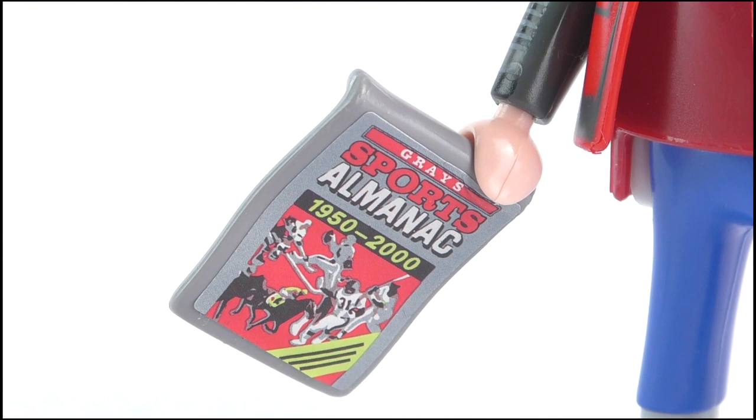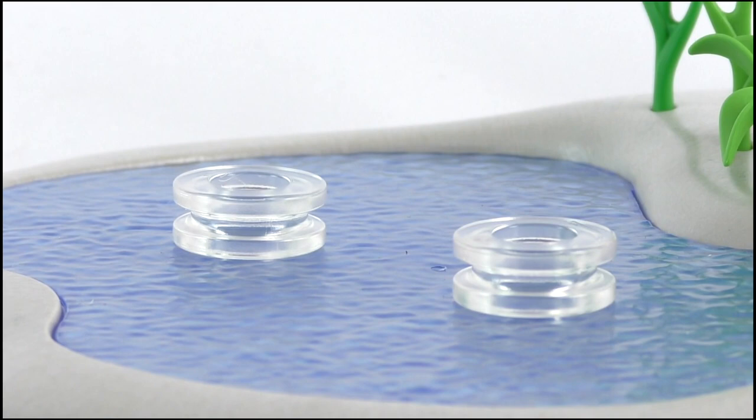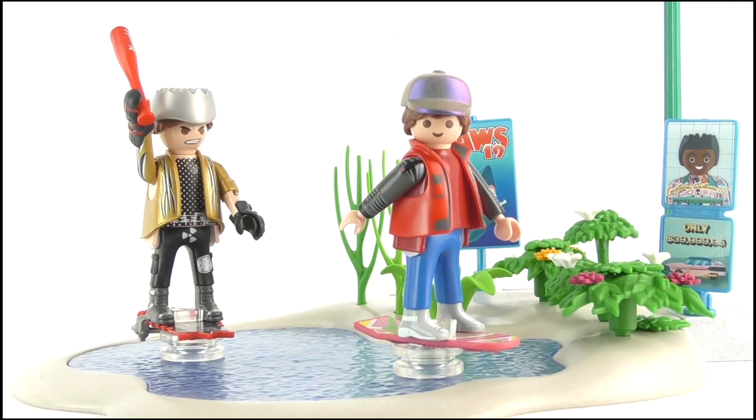We also get two of these transparent rings, which the hoverboarding figures can be placed onto to give a hovering effect. It's not great, though. They don't peg onto anything, and they're very delicate. The slightest touch can knock them straight over.